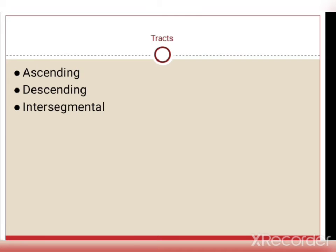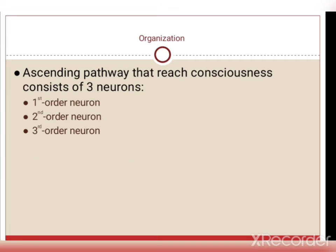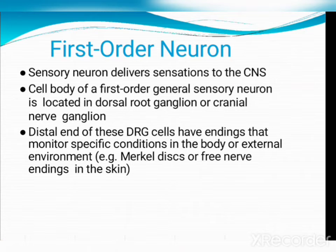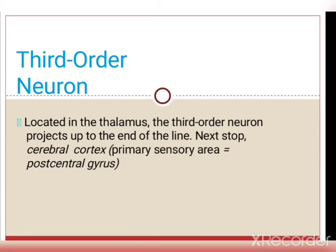Tracts are of three types: ascending, descending and intersegmental. Ascending tracts carry fibres from the spinal cord to higher centres, conducting afferent information (pain, temperature, exteroceptive, proprioceptive) which may or may not reach consciousness. Ascending tracts contain three types of neurons: first order (lies in the dorsal root ganglion, delivers sensation to the CNS), second order (located in the spinal cord or brainstem), and third order (lies in the thalamus, from where information reaches the cerebral cortex).